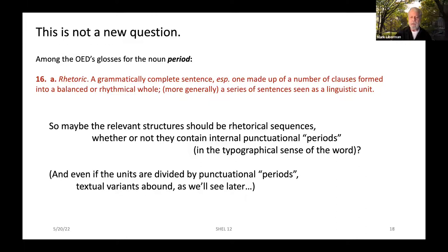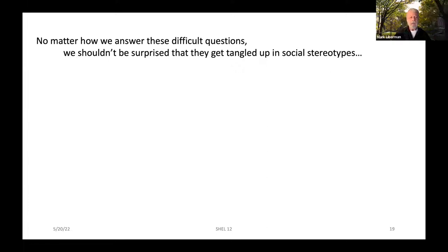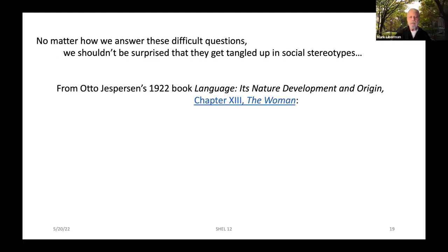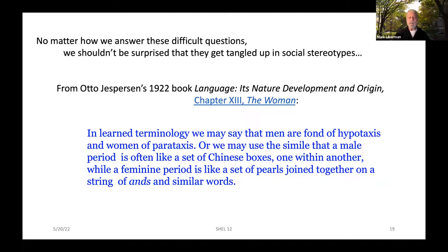And no matter how we answer these questions, it should not be surprising that, like pretty much everything else in language, they get tangled up in various kinds of social stereotypes — for example, gender stereotypes. Here's something from Otto Jespersen's 1922 book, 'Language, Its Nature, Development, and Origin,' Chapter 13, 'The Woman': 'In learned terminology, we may say that men are fond of hypotaxis and women of parataxis. Or we may use the simile that a male period is often like a set of Chinese boxes, one within the other, while a female period is like a set of pearls joined together on a string of ands and similar words.'